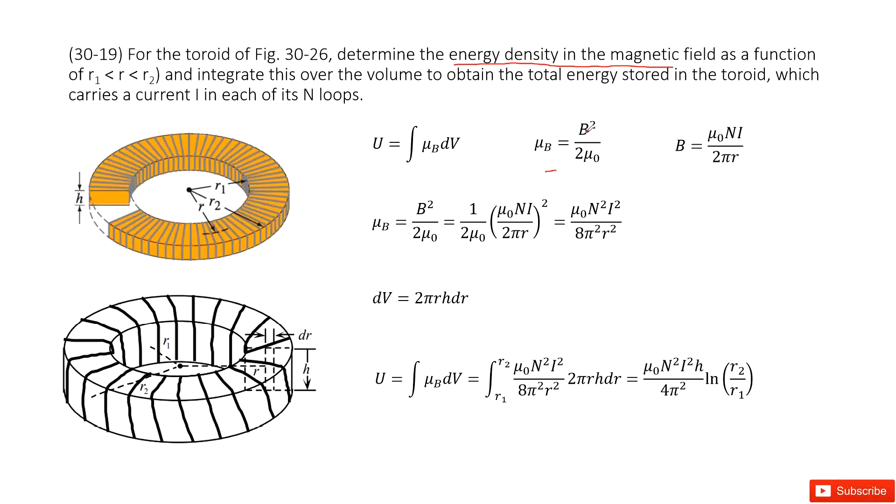you can say μB is B squared divided by 2μ₀. And then, we need to look at the B, magnetic field for this toroid. In the previous chapter, we solved this model. So you can just get it as μ₀NI divided by 2πr. This N is how many loops in this system.